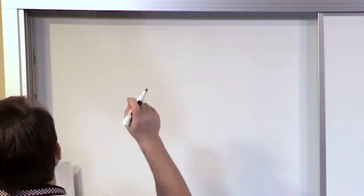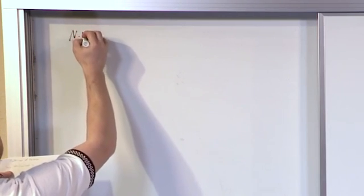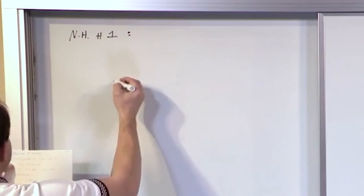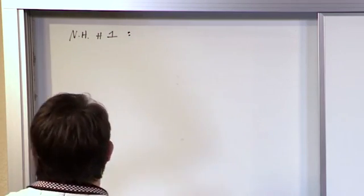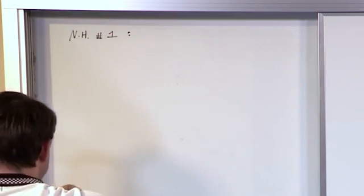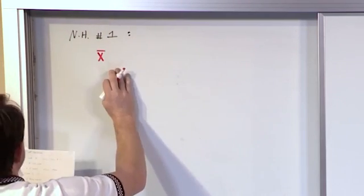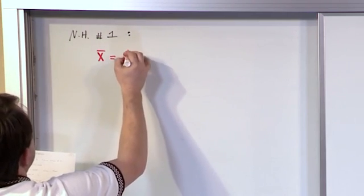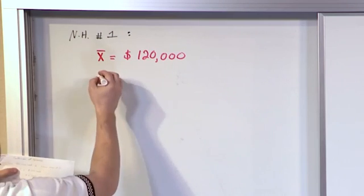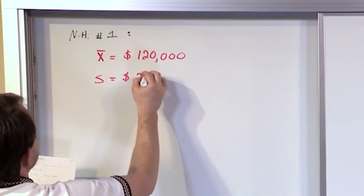Let's say that I have two neighborhoods and I'm looking at house prices. Neighborhood number one has the following data: the average price of a home in neighborhood one is one hundred and twenty thousand dollars. The standard deviation of the houses in that neighborhood is two thousand dollars.